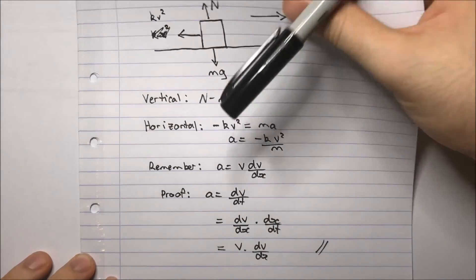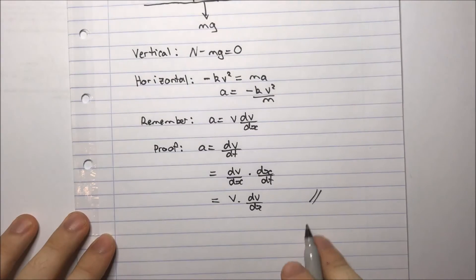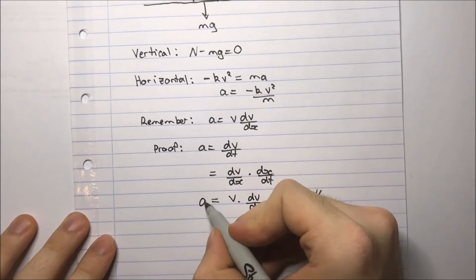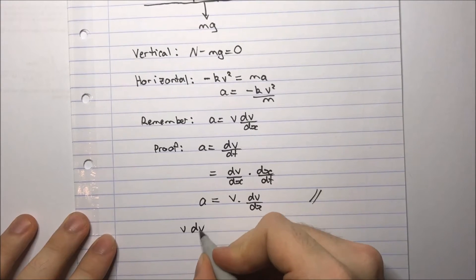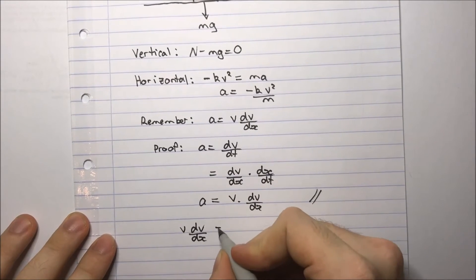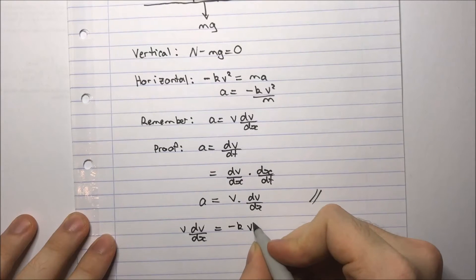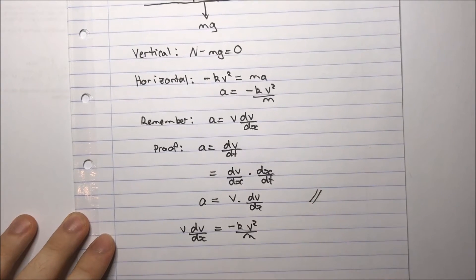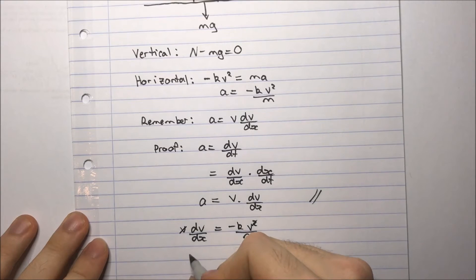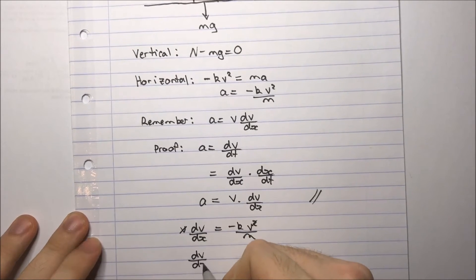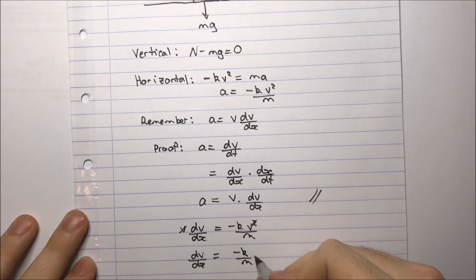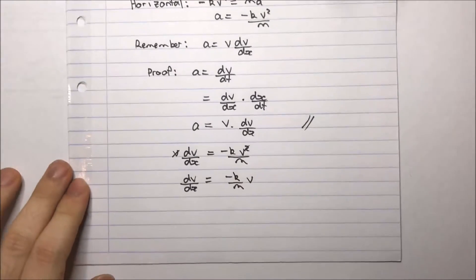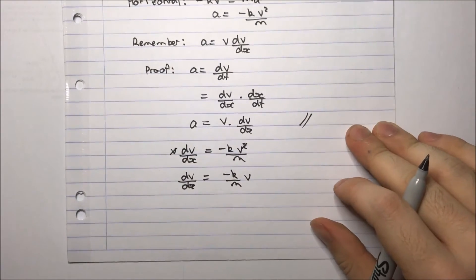So now that we have that, we can set the acceleration here equal to that. So v dv/dx equals minus kv squared over m. I can cancel one v with one v here. I'll get dv/dx equals negative k over m times v.